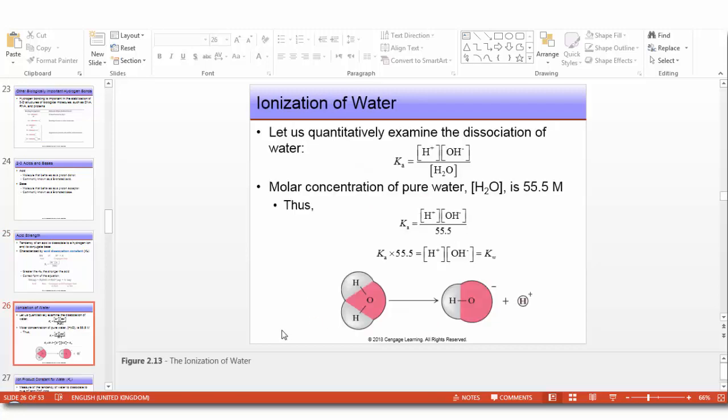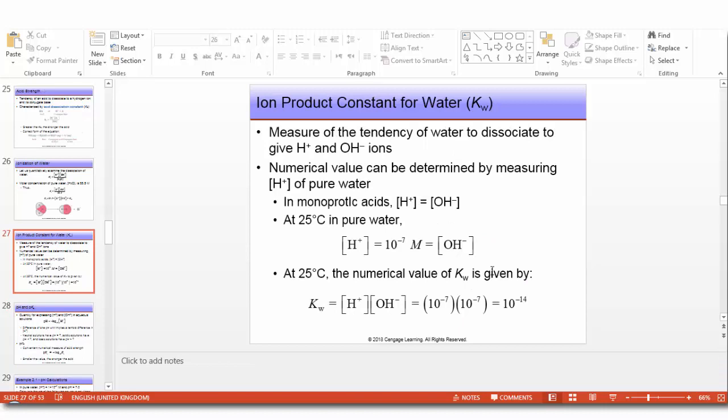Let's quantitatively examine the dissociation of water. Ka equals concentration of H+ times OH- divided by concentration of water. The molar concentration of pure water is 55.5 M. Instead of concentration of water, we put 55.5 M, and Ka has a given value. We multiply them together to get a new constant called Kw, the ion product constant for water, which measures the tendency of water to dissociate to give H+ and OH-.